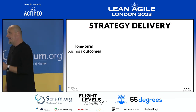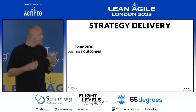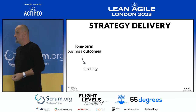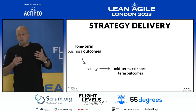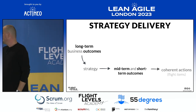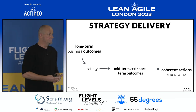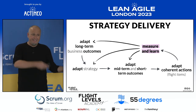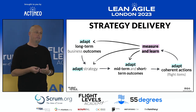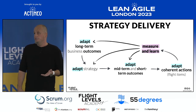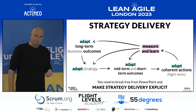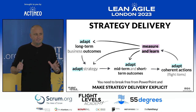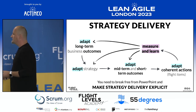We need to get into a forward loop. When thinking about strategy delivery, an organization has long-term business goals — business outcomes they want to achieve. We derive a strategy from those outcomes, then define mid-term or short-term outcomes to tell us if we're on the right track. Then we derive a coherent set of actions — we call these flight items — and then we measure and learn. When we measure and learn, we need to adapt, because strategy is about the future, and the one thing we don't know is the future. Especially on Flight Level 3, we need to be able to adapt.